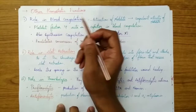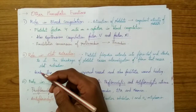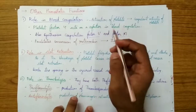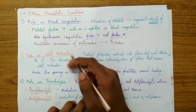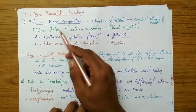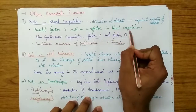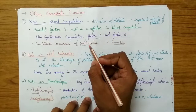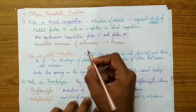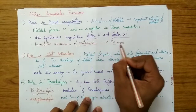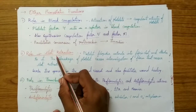Regarding the role in blood coagulation: when platelets are activated, their coagulant activity increases, producing platelet factor 4, which acts as a core factor in blood coagulation. Platelets also synthesize coagulation factors 5 and 11 and convert prothrombin into thrombin.